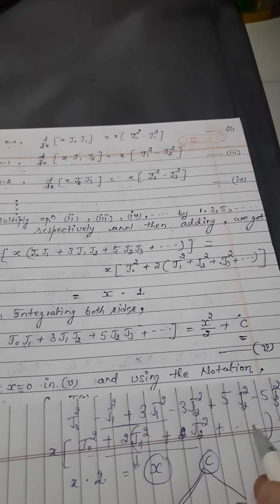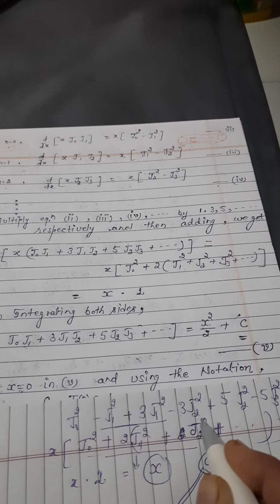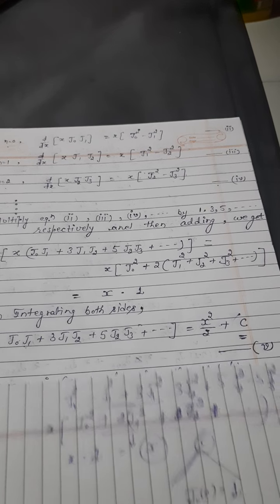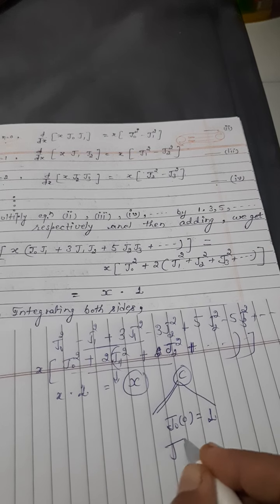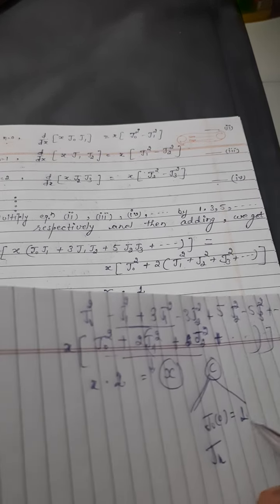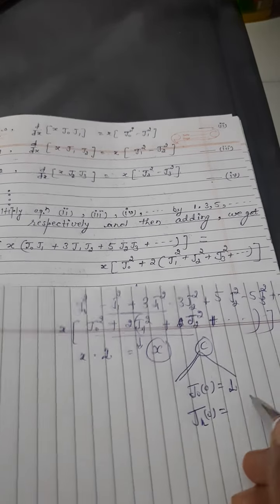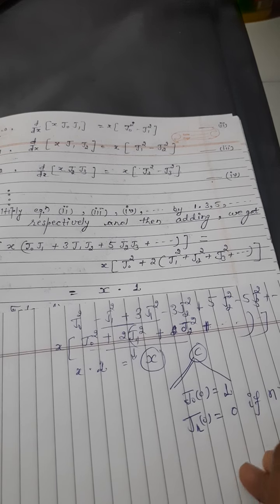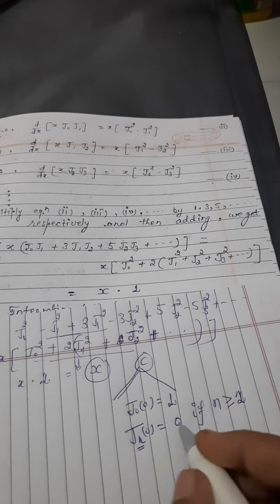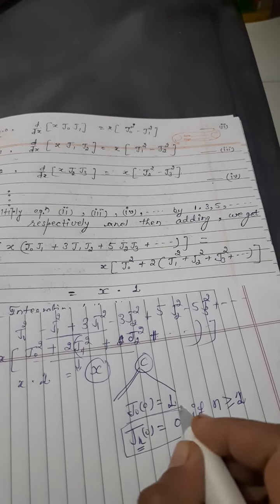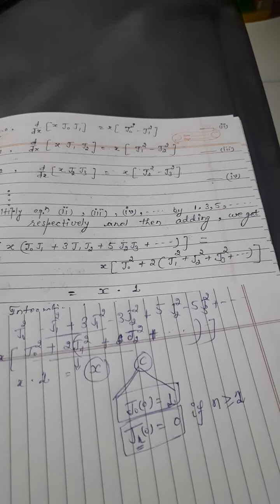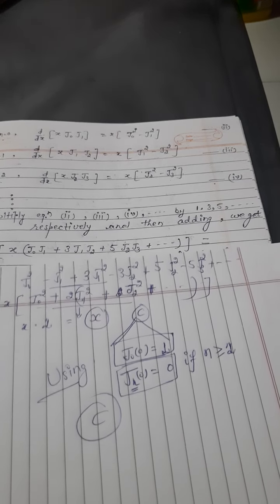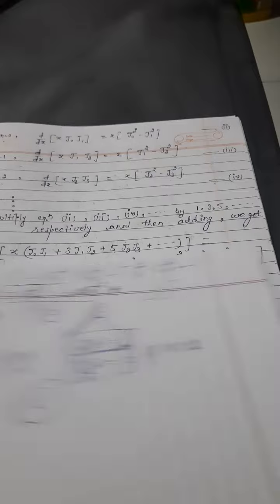Constant C की value find करने के लिए use करेंगे: J_n(0) = 1 if n=0, and J_n(0) = 0 if n ≥ 1. इन notations को use करके constant C की value find out करेंगे।